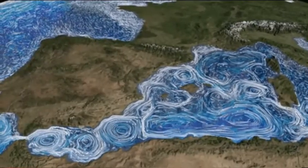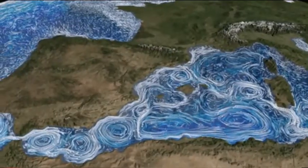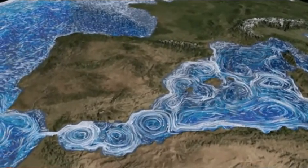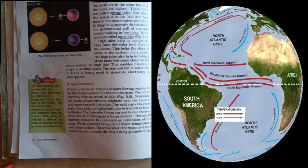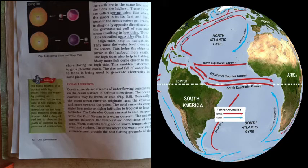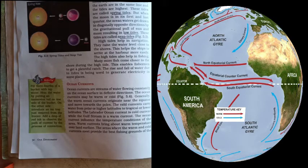The last one is the ocean current. Ocean currents are the streams of water flowing constantly on the ocean surface in definite directions. The ocean current may be warm or cold. Generally, the warm ocean currents originate near the equator and move towards the poles. The cold currents carry water from polar or higher altitudes to tropical or lower latitudes. The regular movement of the mass of water in a defined direction over long distances inside the ocean is called the ocean current. It is like a river of water having different temperatures than surrounding water inside the ocean.